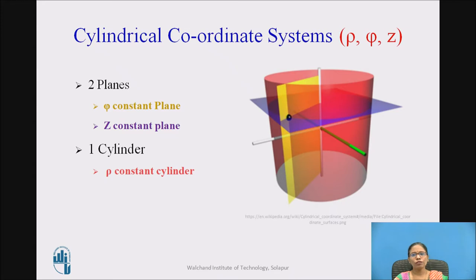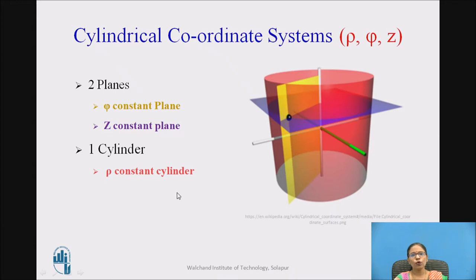In this video I will be talking about the cylindrical coordinate system which has coordinates rho, phi, z. The cylindrical coordinate system consists of two planes and one cylinder. The planes are the phi-constant plane, shown in yellow color, and the z-constant plane, shown in violet color. The cylinder is the rho-constant cylinder, shown in pink color. These three together form the cylindrical coordinate system.